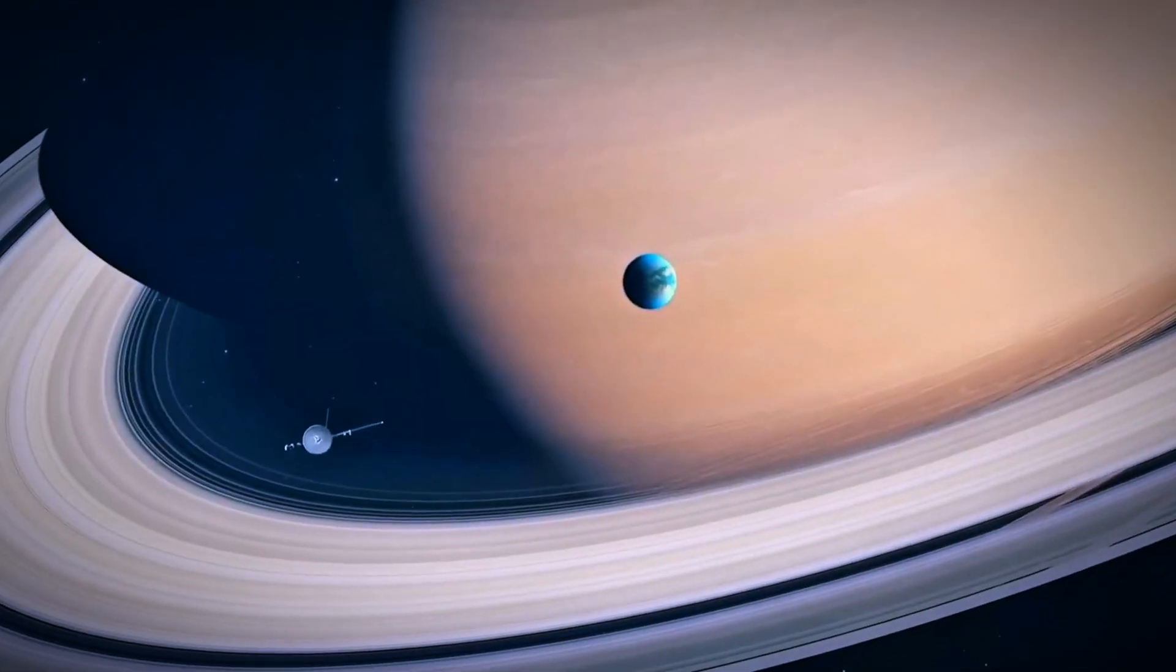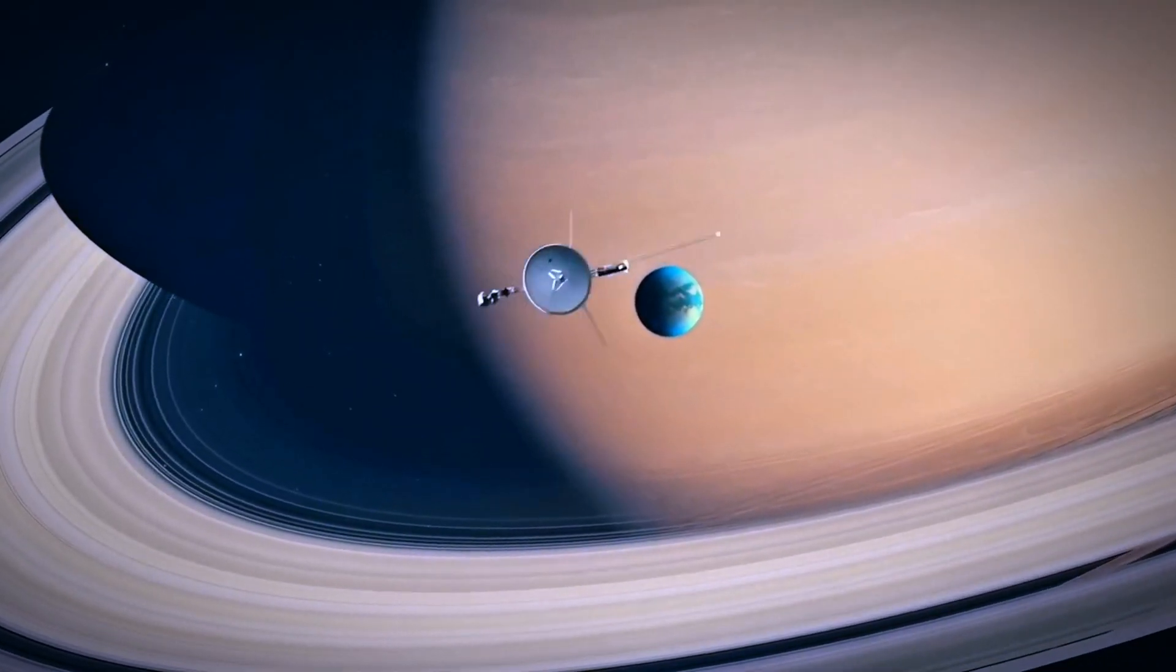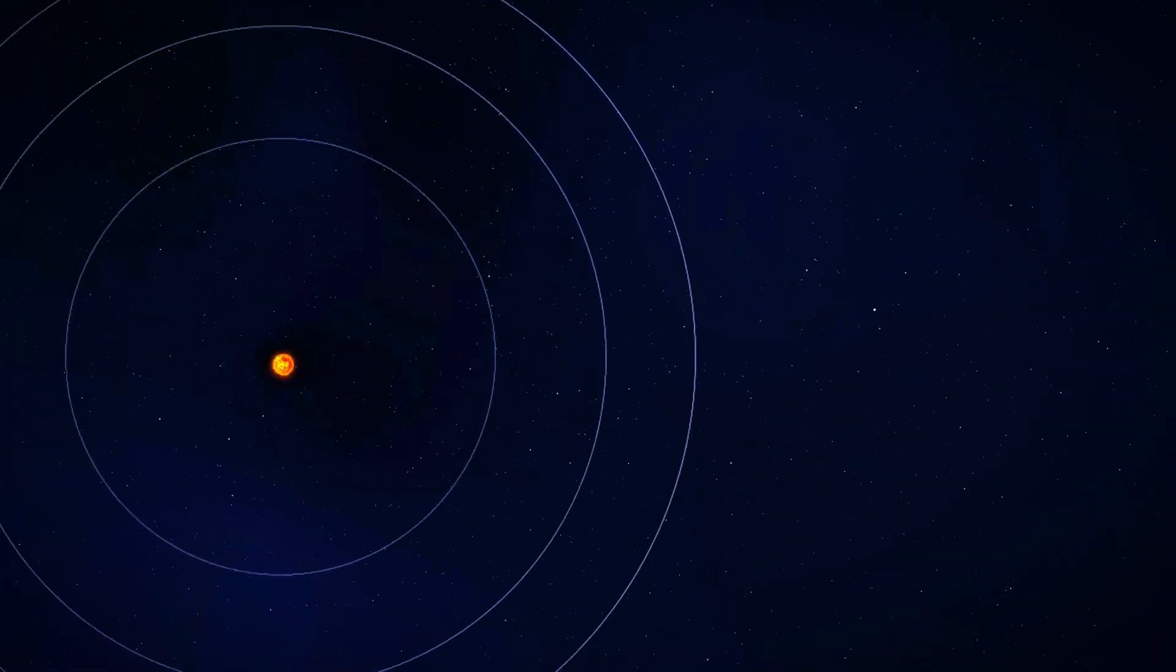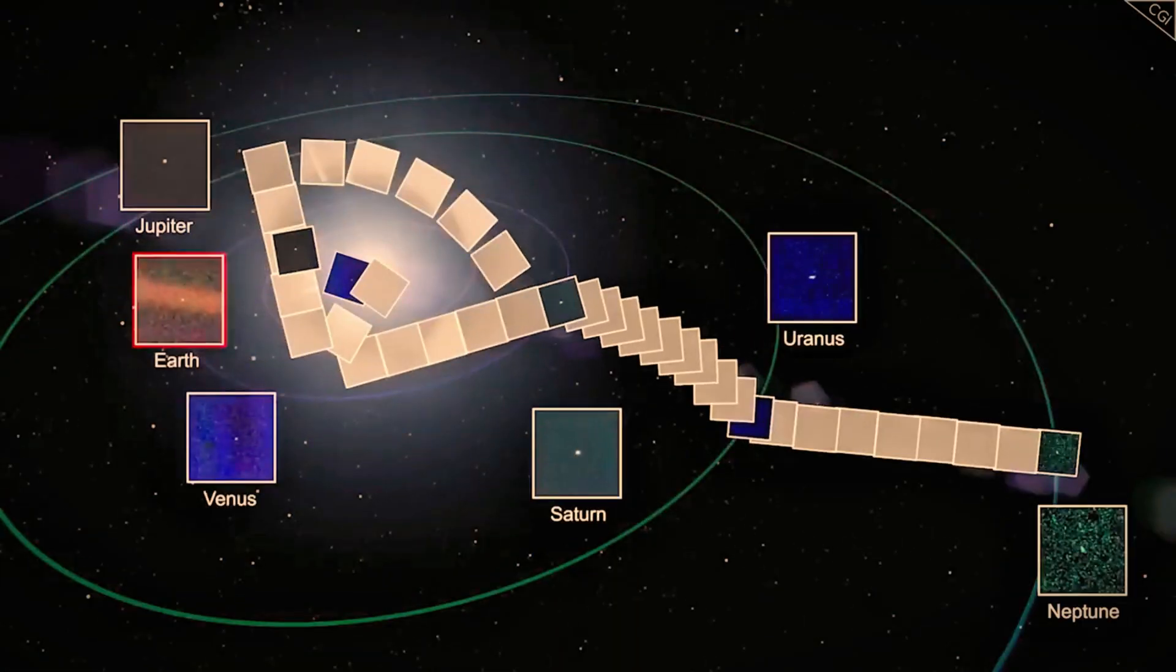Voyager 1's close flyby of Saturn's largest moon provided unprecedented insights into its dense atmosphere. This trajectory precluded further planetary encounters, setting Voyager 1 on a course toward the edge of our solar system.